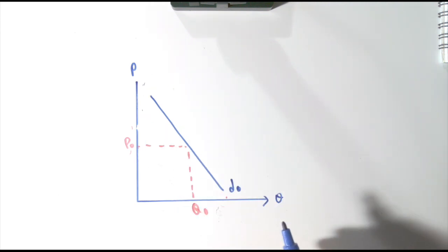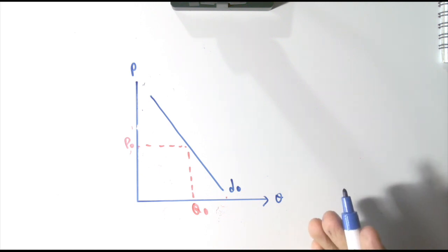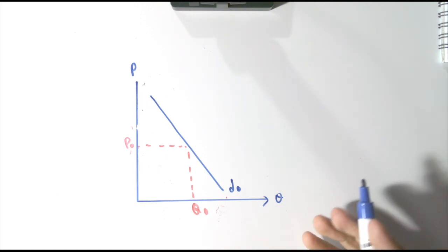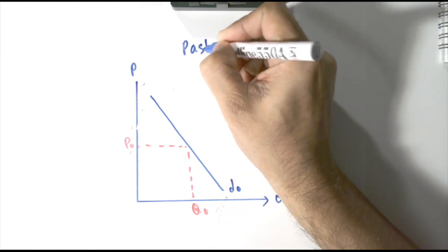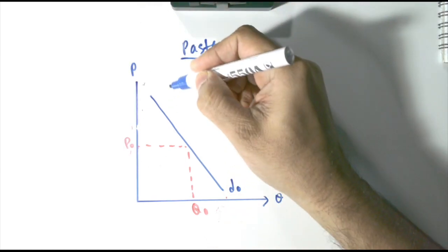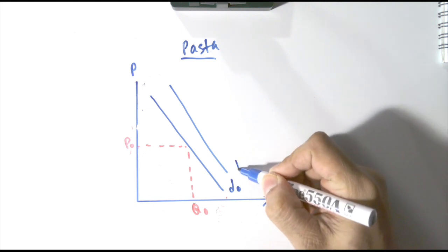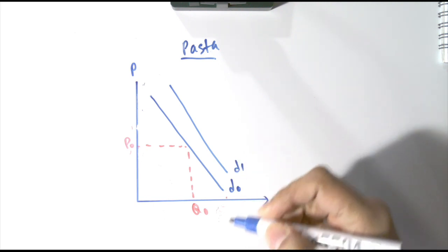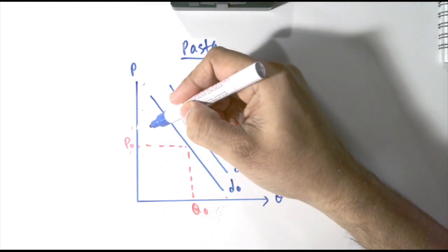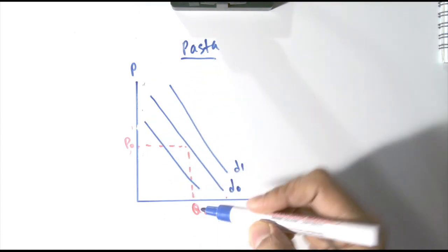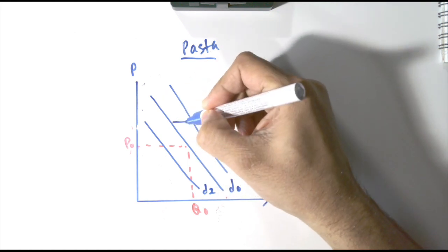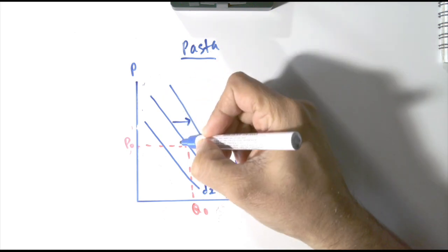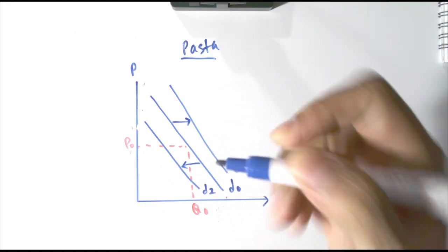The last determinant is number of buyers. If there is a greater number of buyers who want to buy pasta, automatically the demand would be greater, shifting from D0 to D1. If the number of buyers decreases, then the demand decreases from D0 to D2. If buyers are increasing, it shifts to the right; if decreasing, it shifts to the left.